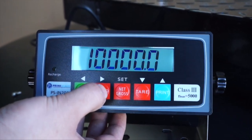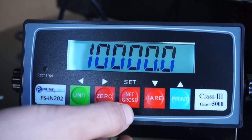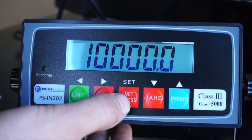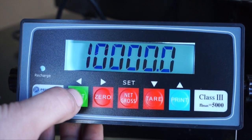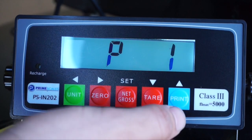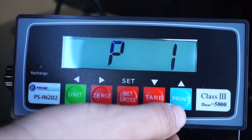In this video, we will use 10,000 pound capacity times one pound accuracy. After setting to 10,000 pounds capacity, press net gross button to save setting. Press unit to go back to P1.